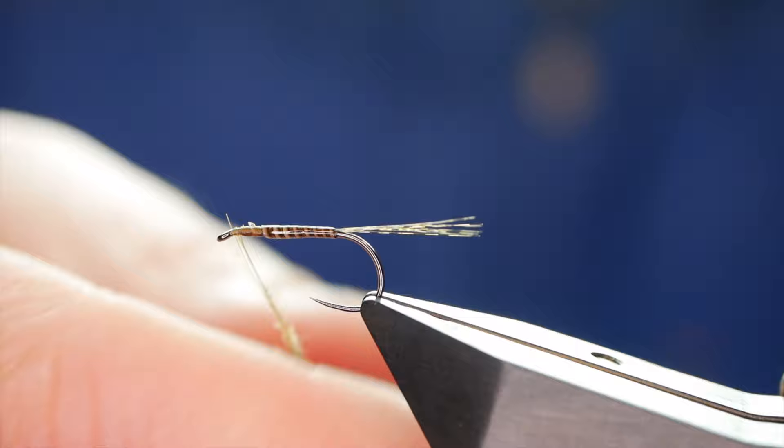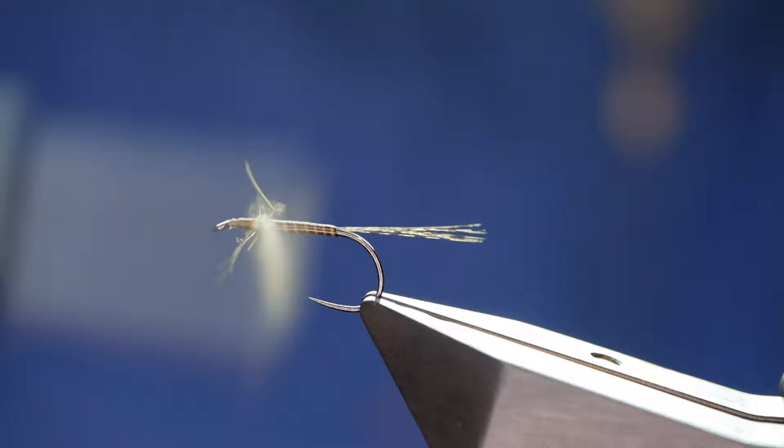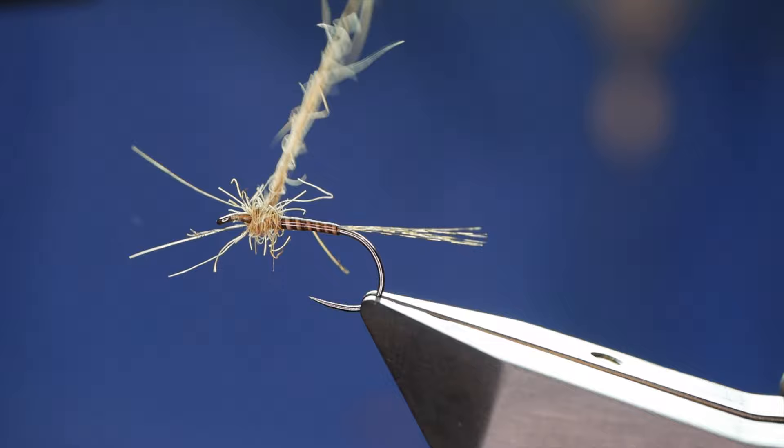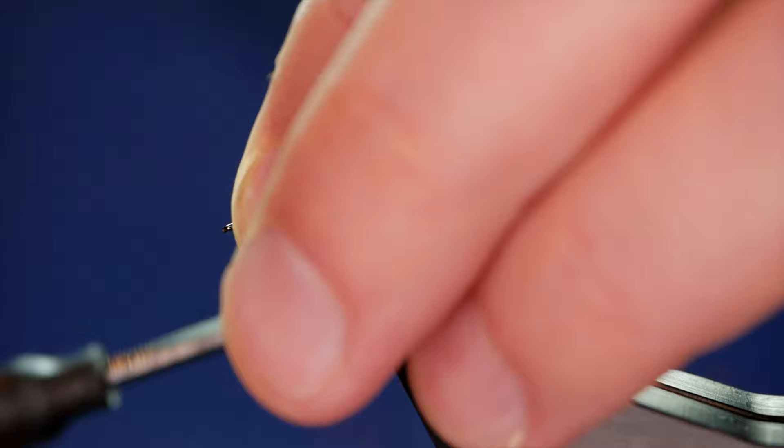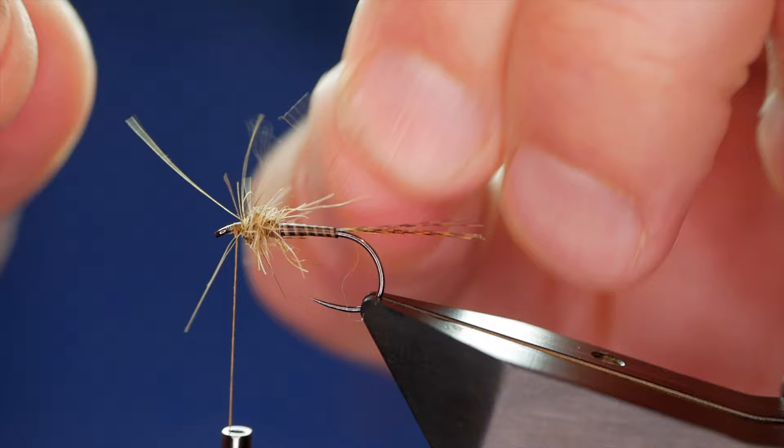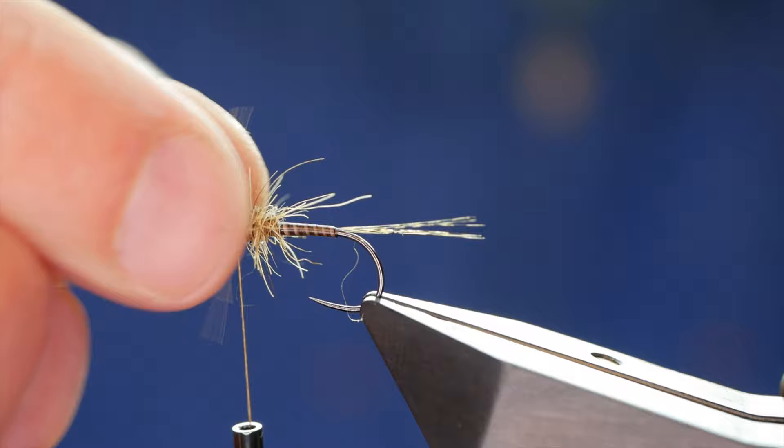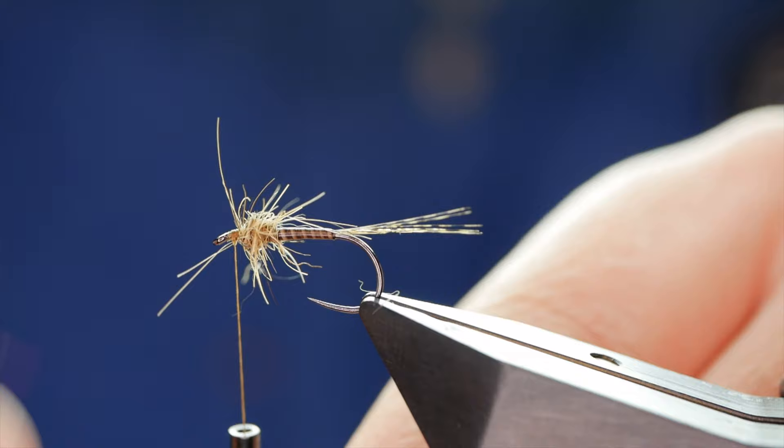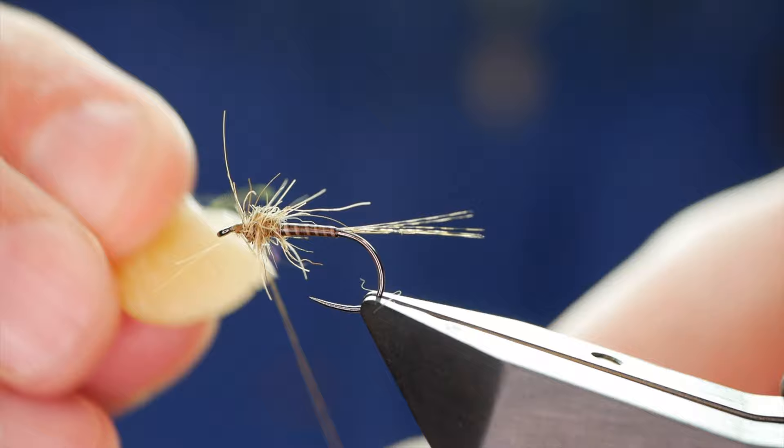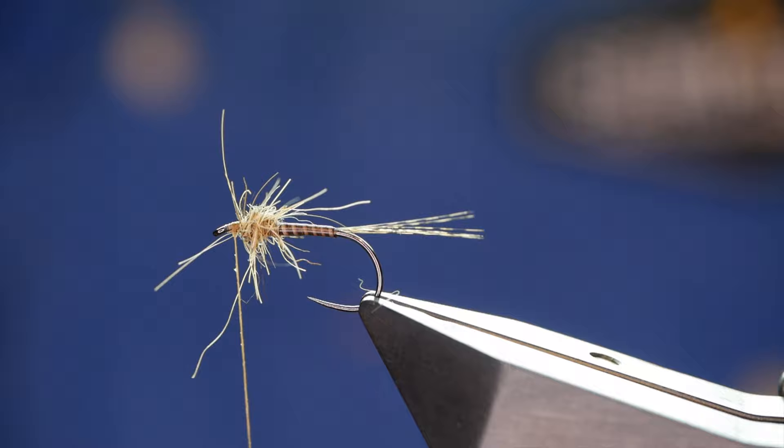And I'm going to take out some of the fibres once the fly's finished. So I'll come back to the thorax area. And then just start to build up that nice thorax. Now that's about as big as I want it. Maybe a little bigger than I want it actually. But it's looking not too bad. As you can see all that spikiness is really I really like that. Now before I go on to tie in my wing, I'm going to add a little bit of wax to my thread to just make sure that it grips the CDC when I tie it in.